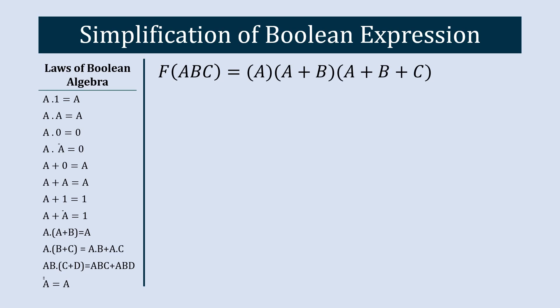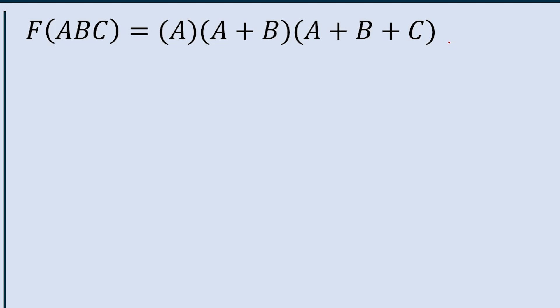In this video we are going to learn how to simplify a boolean expression. This is our equation: A·(A+B)·(A+B+C). First, we will note how many gates we need to represent this equation. Here we have AND, then OR, then AND, then OR, and OR operations.